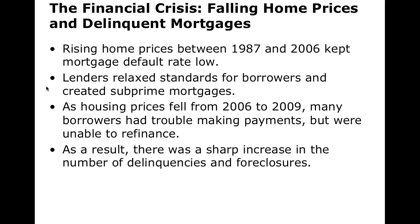Too many subprime mortgages were issued too aggressively, and there was a disconnect of responsibility between the people issuing them and where the mortgage landed. The people creating these mortgages were not personally responsible if the mortgages were not paid — the risk of mortgage defaults landed on the investors, who had no idea there was any risk. This disconnect is what allowed all these subprime mortgages to be created.